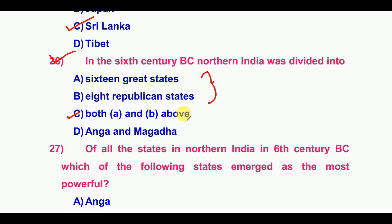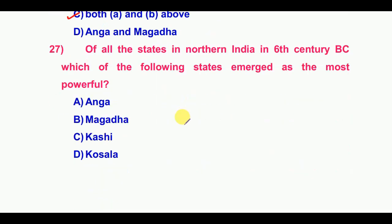Twenty-seventh question: Of all the states in northern India in the sixth century BC, which emerged as the most powerful? The answer is Magadha.